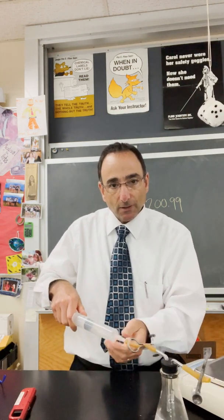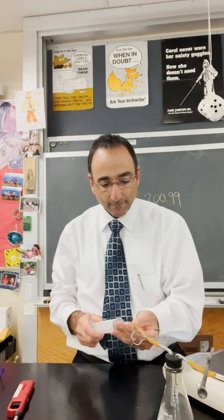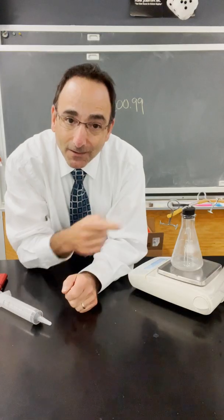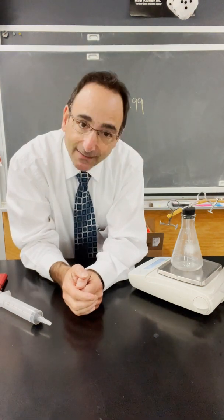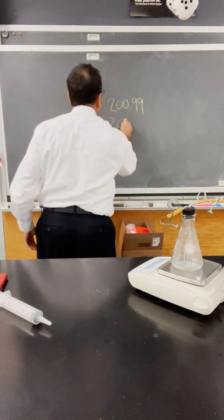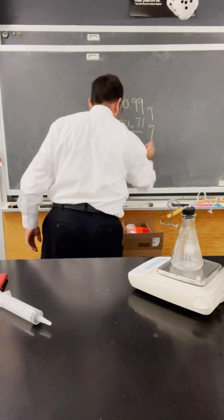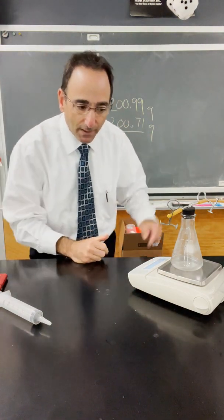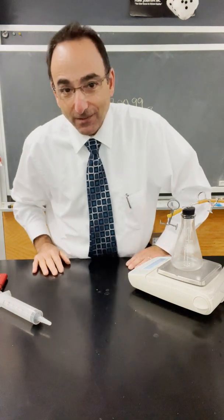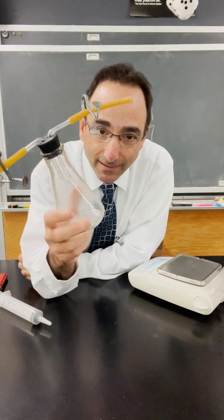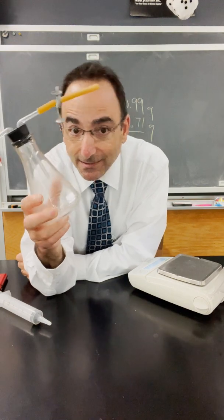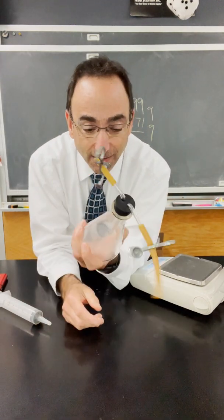It should get quite hard pulling back. Now we're back on the digital balance and we find that the new mass is 200.71 grams. We're going to find the difference between those in a moment, but this is the part that the kids love — even after 30 years it still amazes me. We know how many grams of gas we pulled out, but how much volume of gas did we pull out? You can't see a drop in the gas level in the flask.